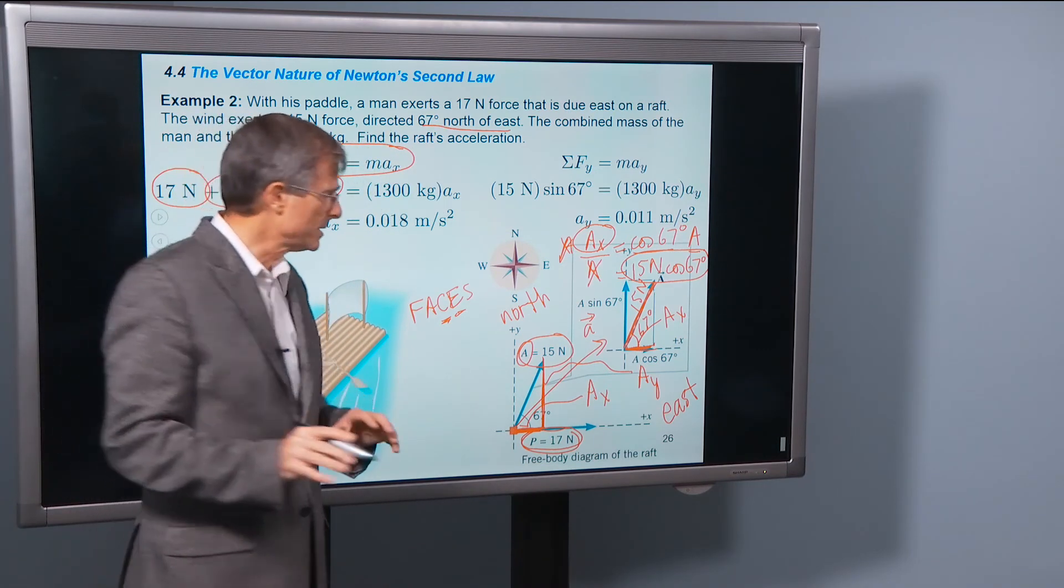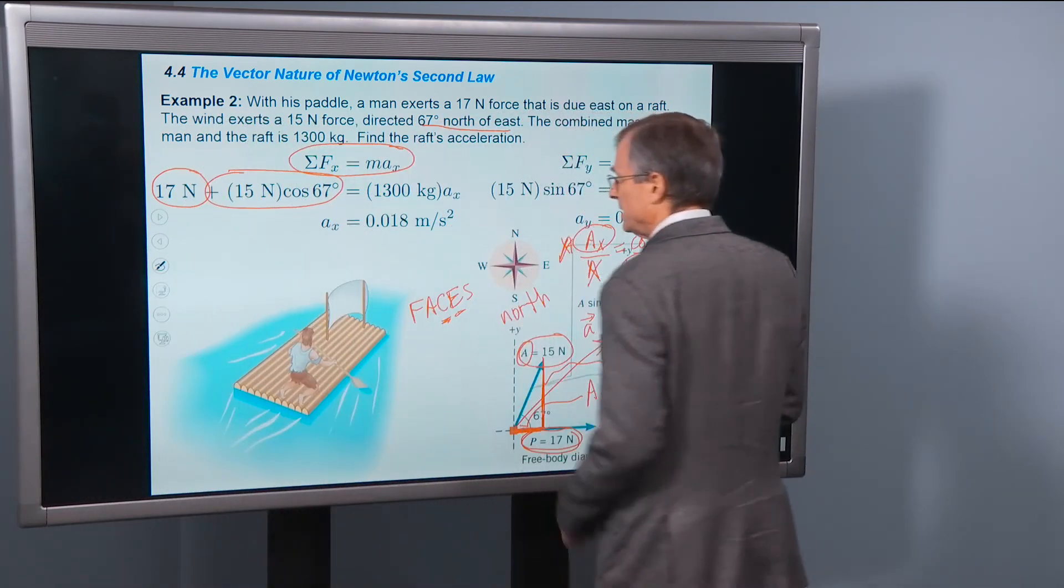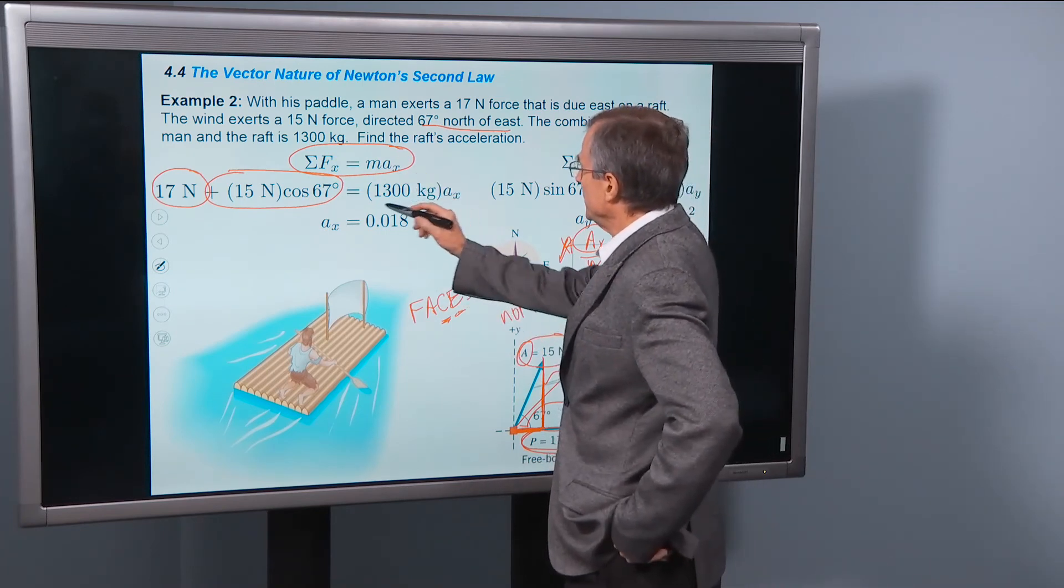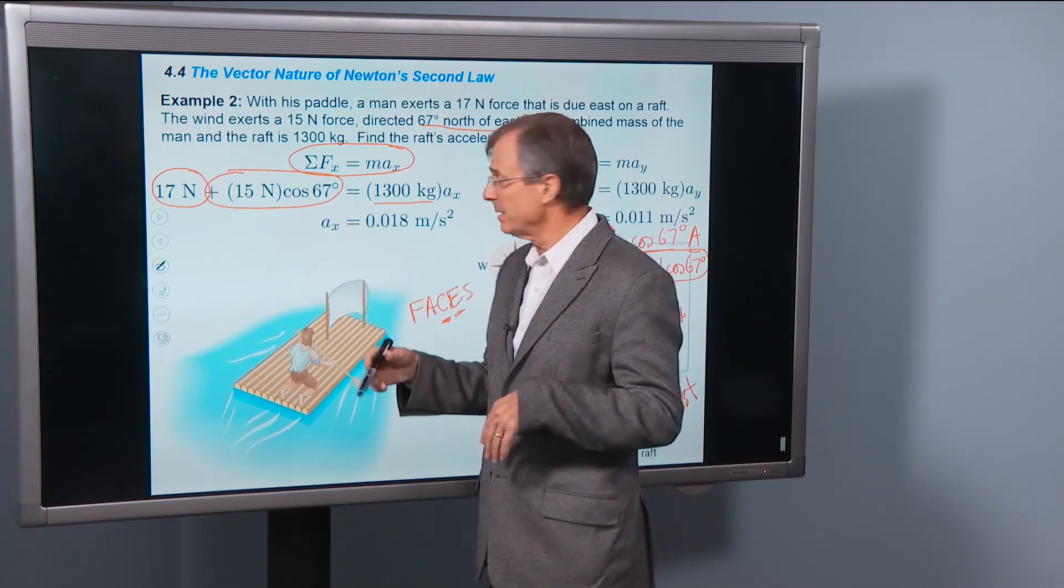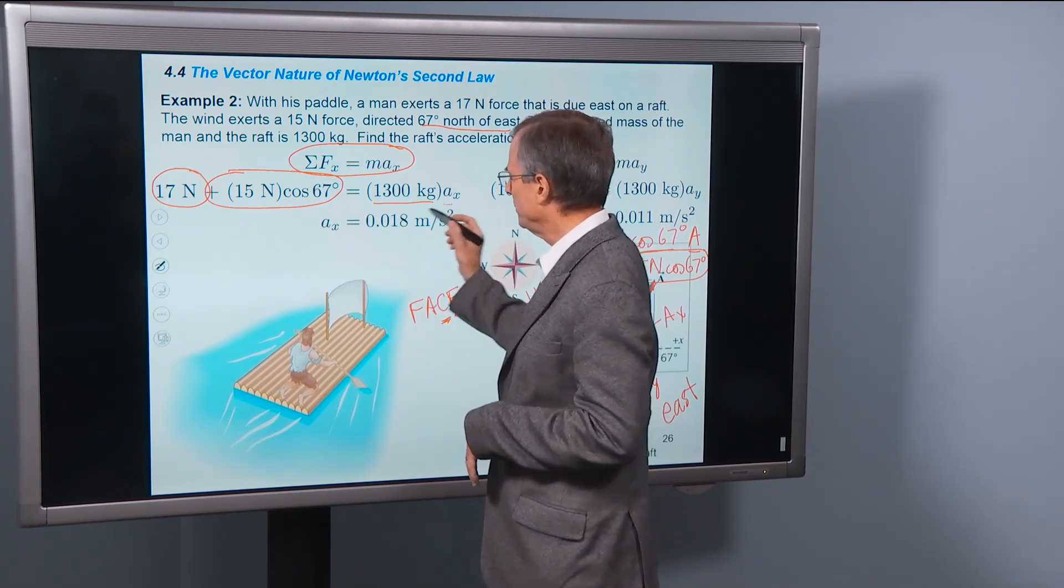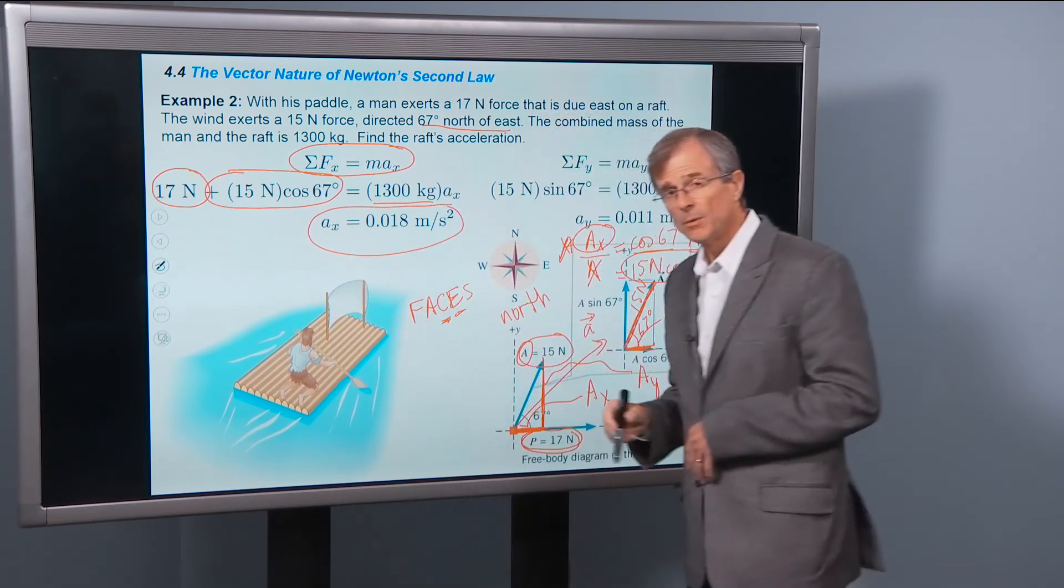The x component of this 15 newton force. So I think, I'm hoping that's giving you the idea about how we go about these. The mass we know, it's 1300 kilograms. Now all we have to do is plug all these numbers in, divide by 1300, and we get the acceleration in the x direction. What about the y direction?